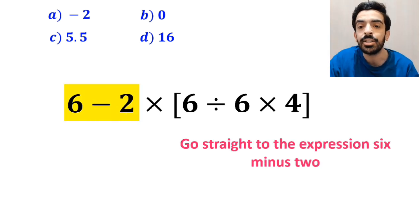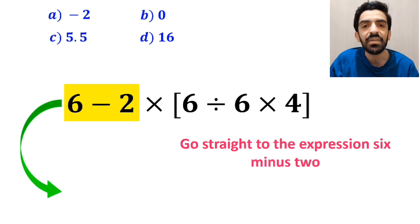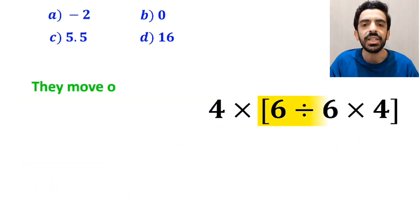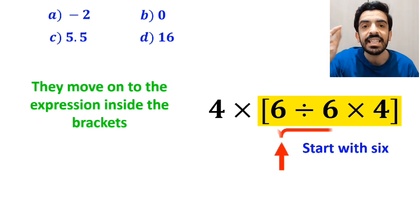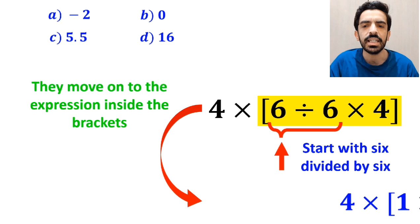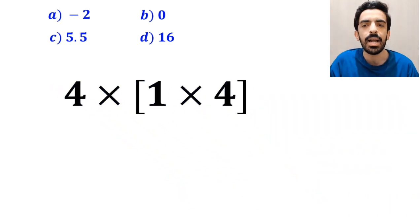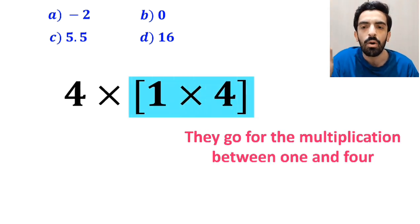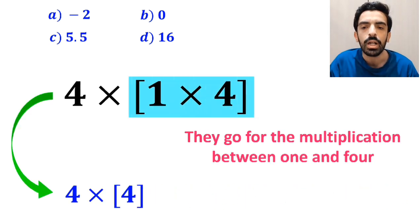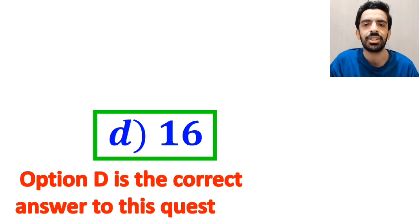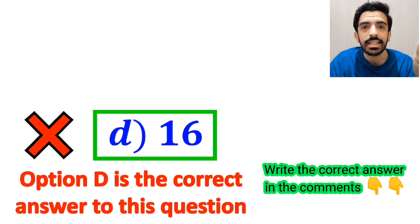Many people first go right to the expression 6 minus 2, highlighted in yellow, and write 4 multiplied by 6 divided by 6, then times 4 inside the brackets. The next step, they start with 6 divided by 6, simplifying to 4 multiplied by 1 times 4 inside the brackets. Then they multiply 1 and 4 to get 4 times 4, which gives them the answer 16.